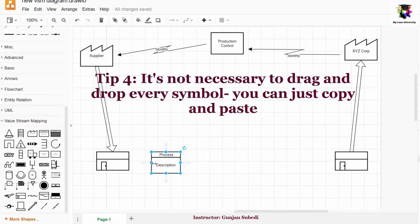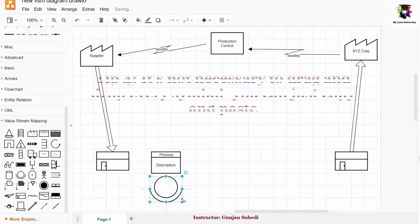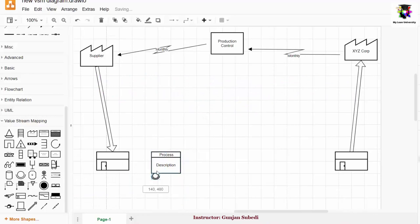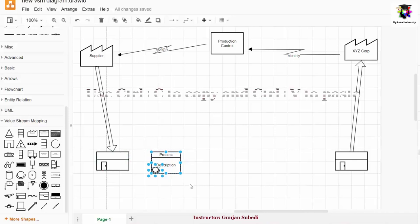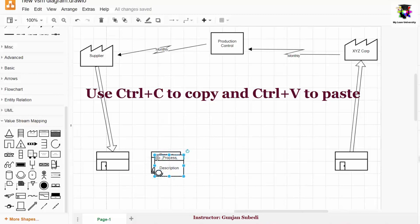What you can do is you can drag one process box over here. And since it also contains the information of number of operators, you can also drag this and keep this information somewhere inside. And then by pressing the control to this symbol and the process box, we select both these symbols. We then press ctrl-c to copy both and then press ctrl-v to paste.